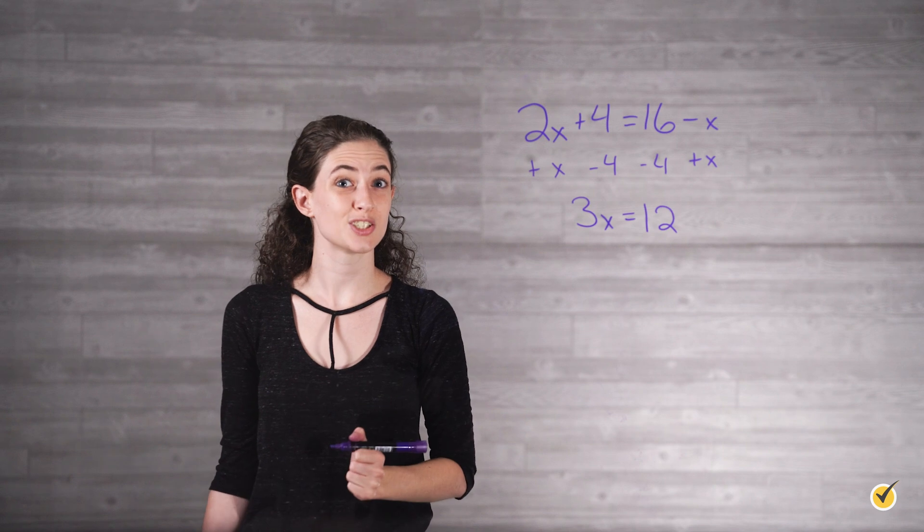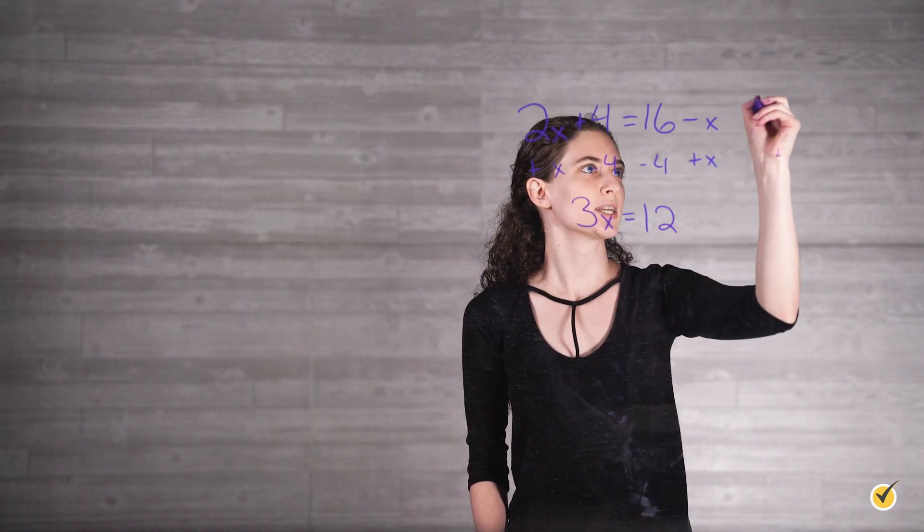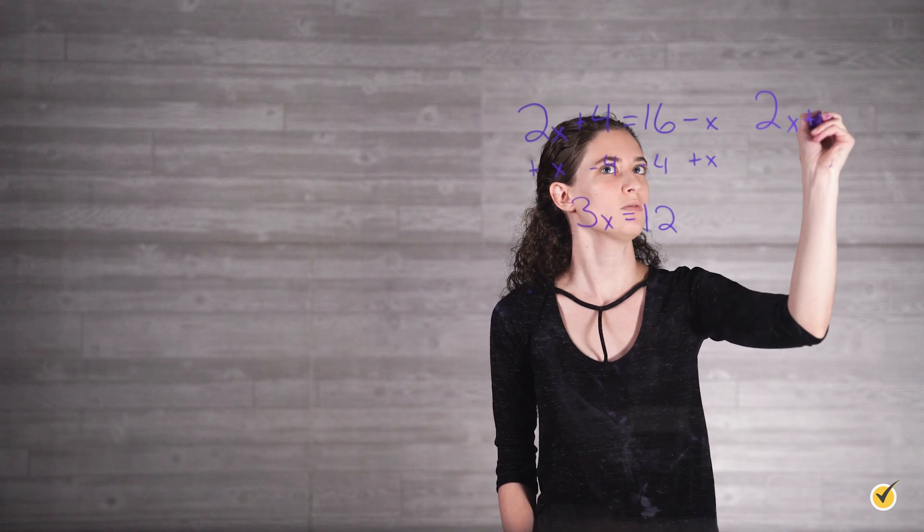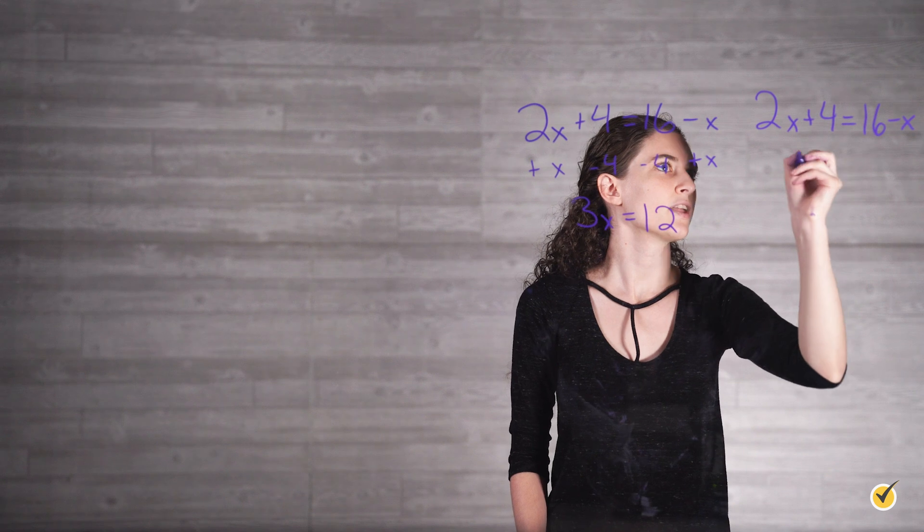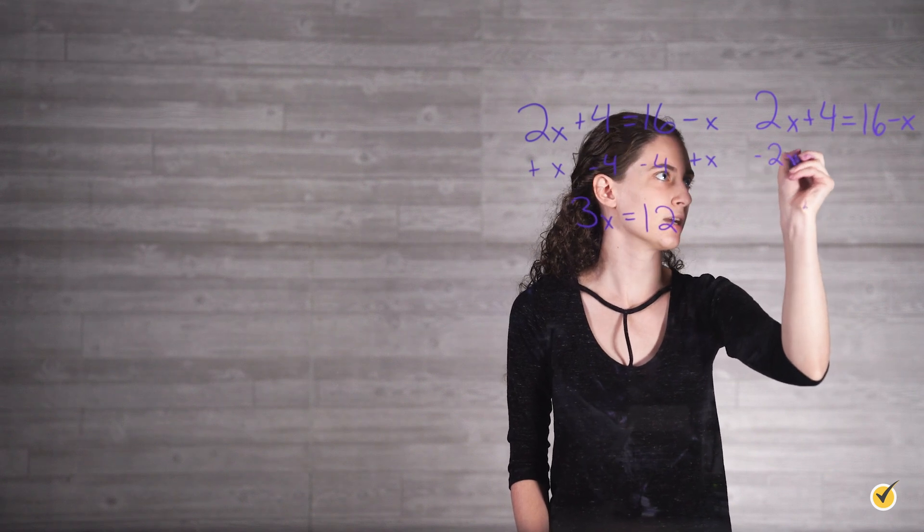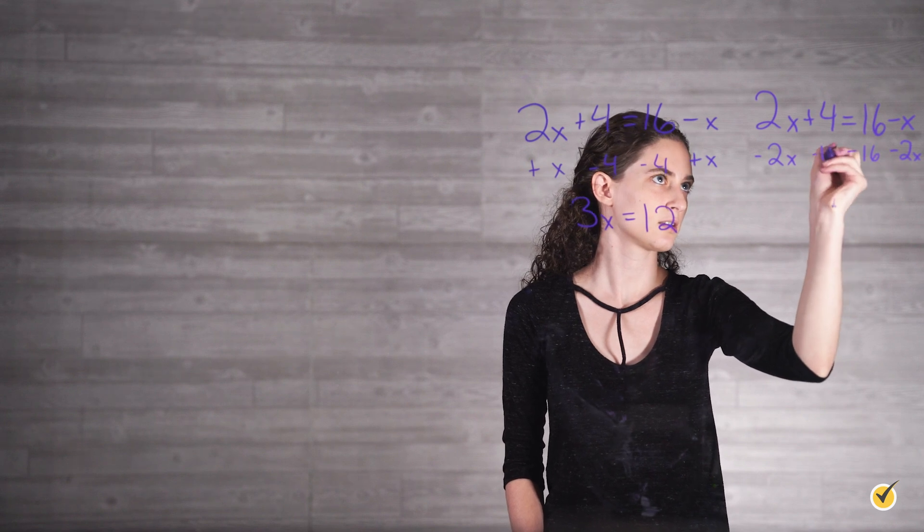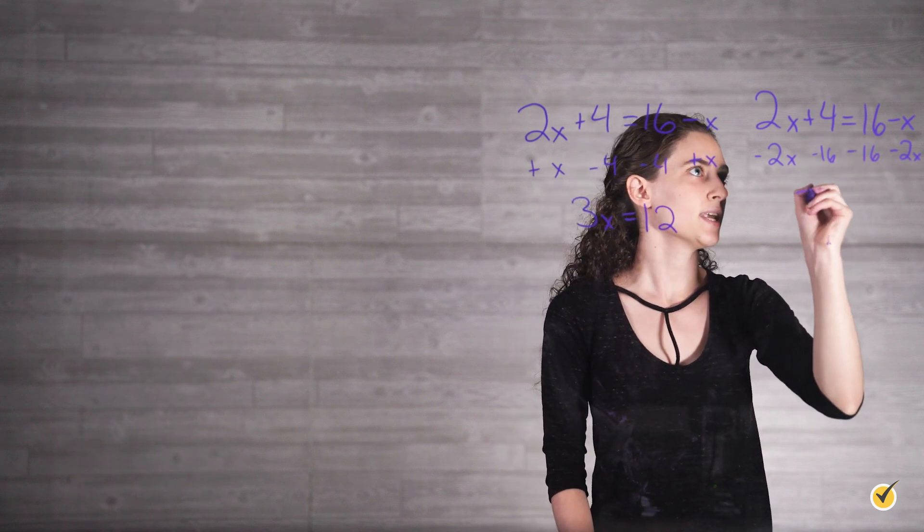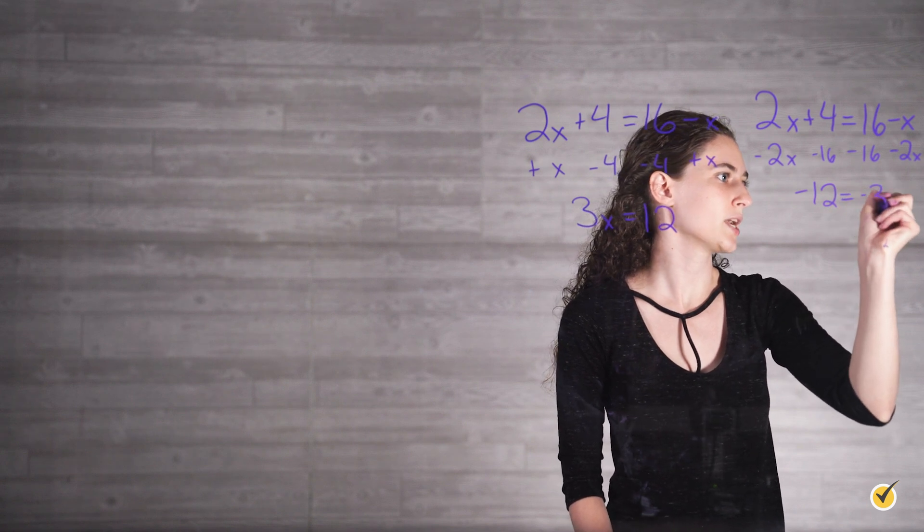Or we can subtract 2x and subtract 16. So if we try this one again, we have 2x plus 4 equals 16 minus x. And if we subtract 2x from both sides and subtract 16, that will leave us with negative 12 equals negative 3x.